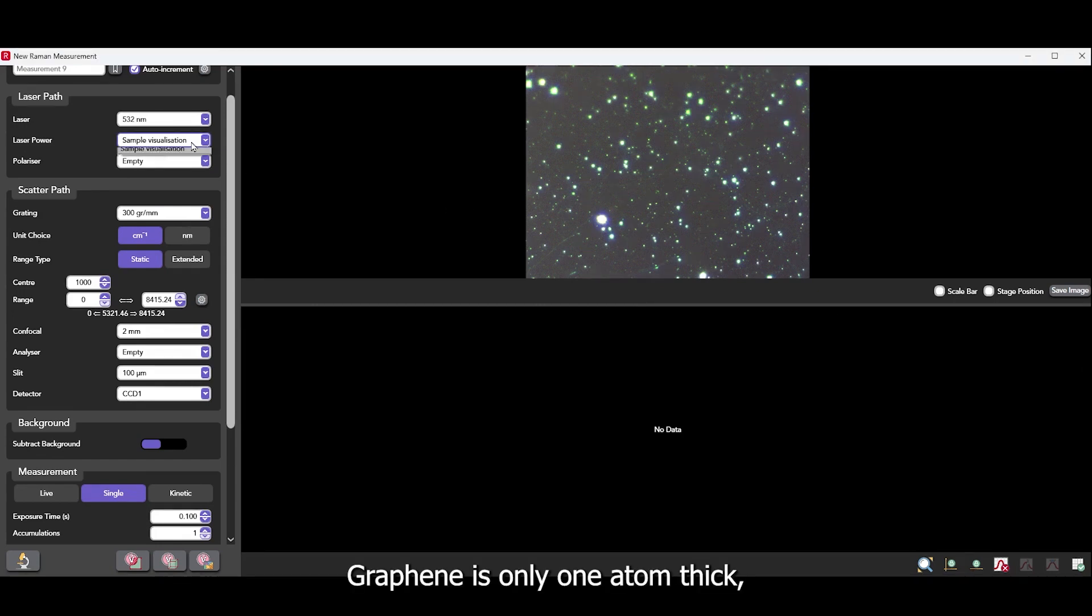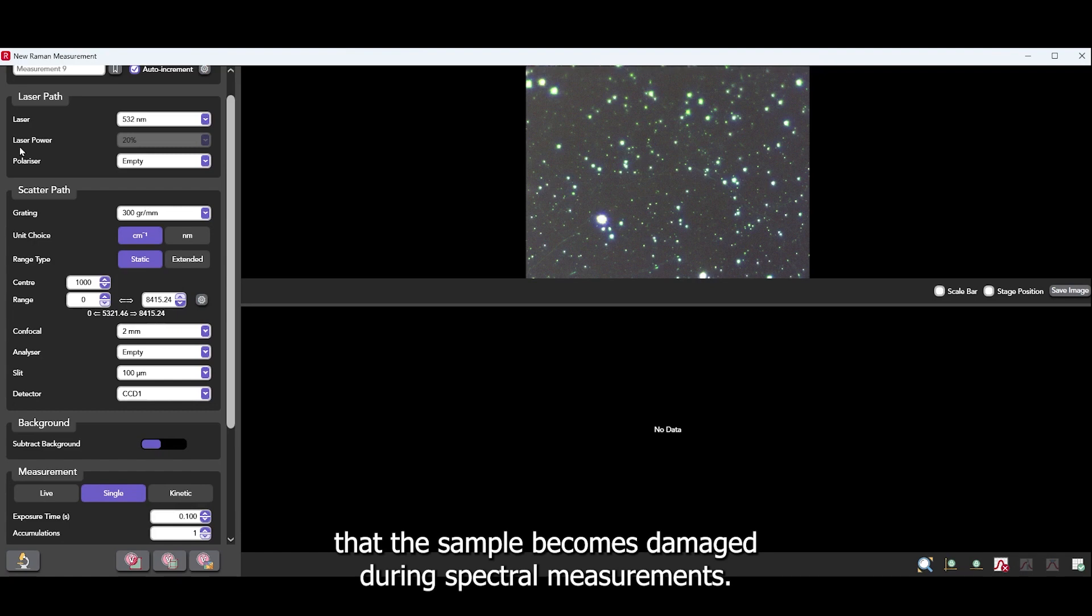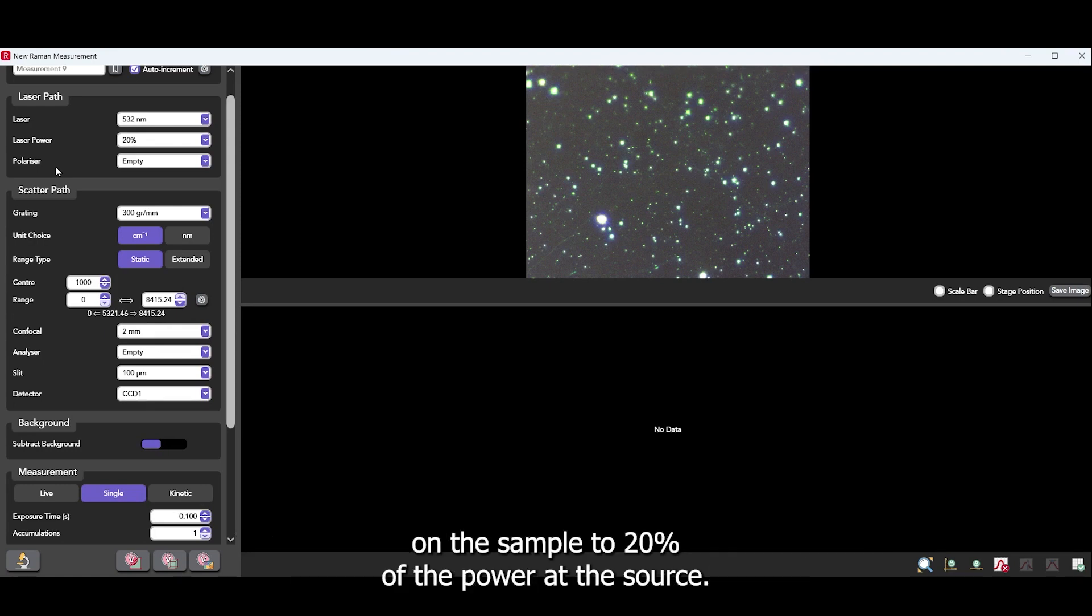Graphene is only one atom thick so it is important that the laser power is not too high or the sample becomes damaged during spectral measurements. To prevent burning we will use the fully automated laser attenuator to reduce the laser power on the sample to 20% of the power at the source.